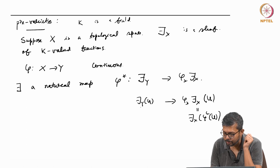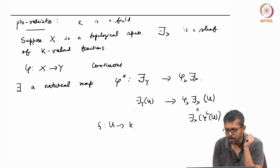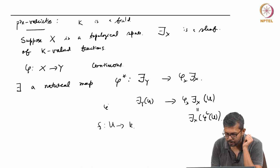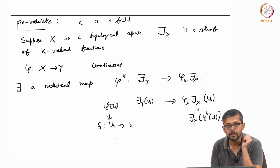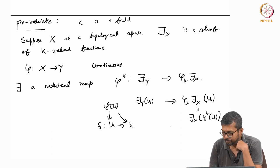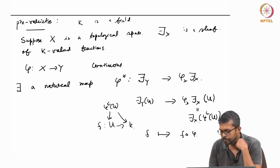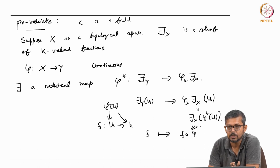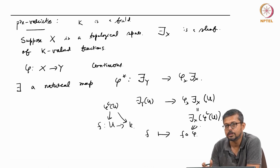An element of F(Y)(U) is a map from U to K, because after all it is a sheaf of K-valued functions. What I do is: I consider phi inverse of U and compose - so f maps to f composed with phi. This gives a natural map from F(Y) to phi_* F(X) for every continuous map of topological spaces.